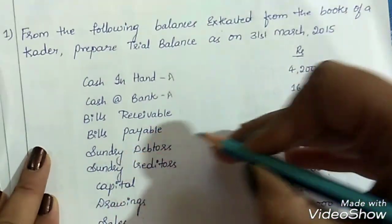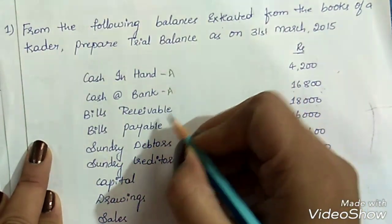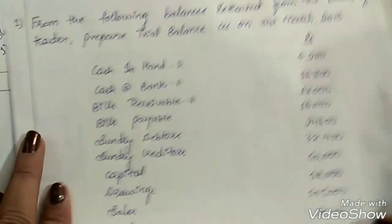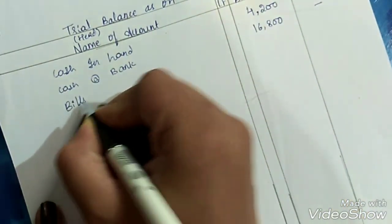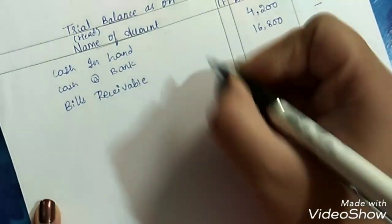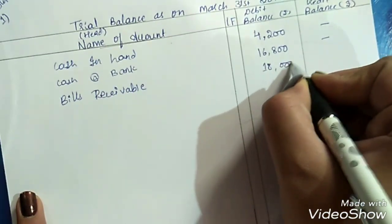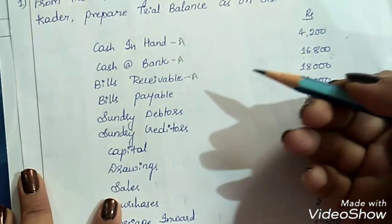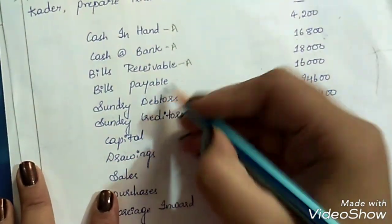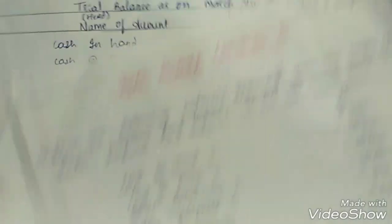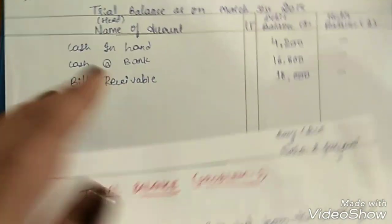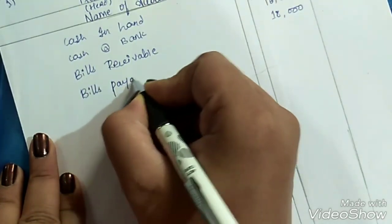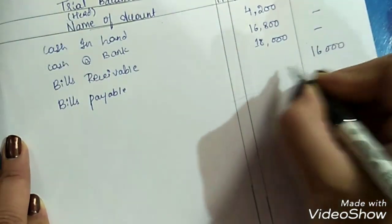Next is bills receivable. Bills receivable refers to the amount which we have to receive from our debtors, so when we are receiving it becomes our asset. Amount is Rs. 18,000 — record it on the debit side. Next is bills payable, which refers to the amount which we have to pay to our creditors, so it will be our liability. Liabilities need to be recorded on the credit side. Bills payable, Rs. 16,000 on the credit side.